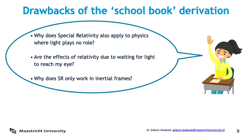A second question a smart student might ask is: are the effects of relativity due to light taking some time to travel? For instance, time dilation — does time really stretch when watching a moving clock, or is it just that it takes a while for me to see the clock because the light has to travel from the clock to my eye and the clock is traveling away? A good question, as we do in fact make blatant use of light travel time in this schoolbook derivation. So a student might have the takeaway message that the effects of relativity are because of the travel time of light. And they're not.